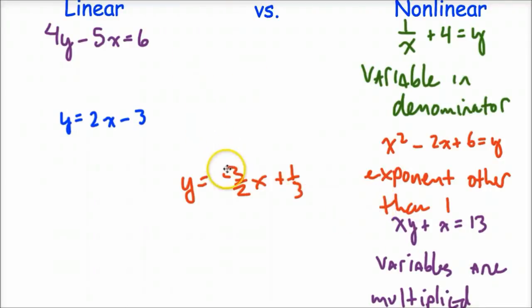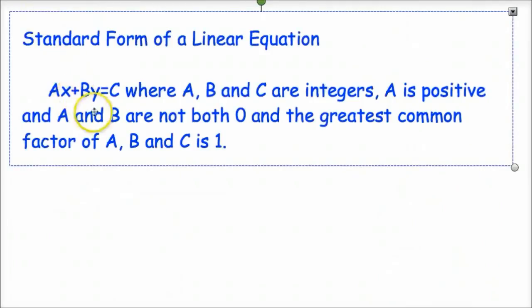That is going to be linear because it's just a constant times the variable. Don't be confused because this constant is negative three halves. That x is still not down in the denominator. It's separated. It would be in the numerator if you try to write it with that fraction. So those are your main differences between linear and nonlinear.